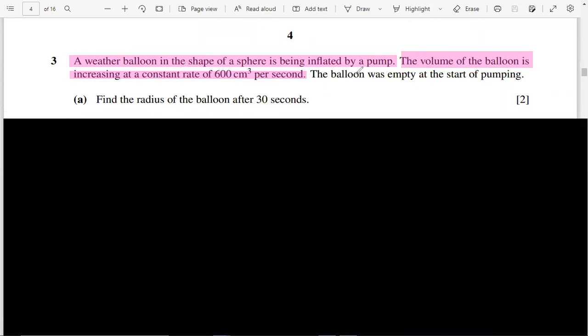That means the volume of the balloon with respect to time changes. Since this is centimeter cube per second and the sphere is the volume, that means dV/dt is equal to 600 centimeter cube per second.